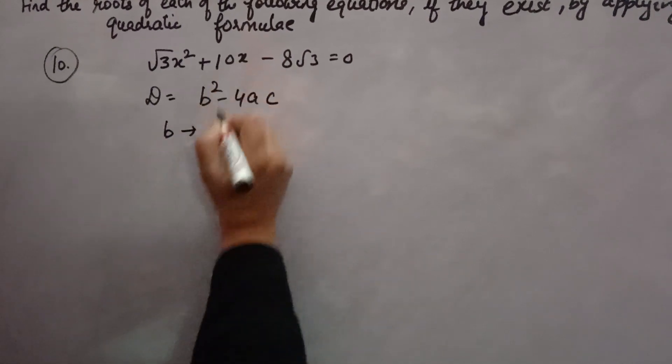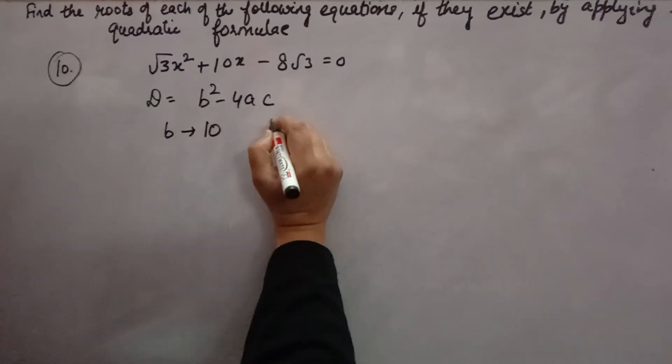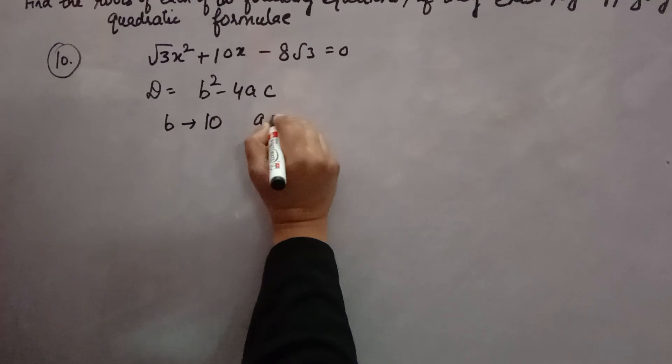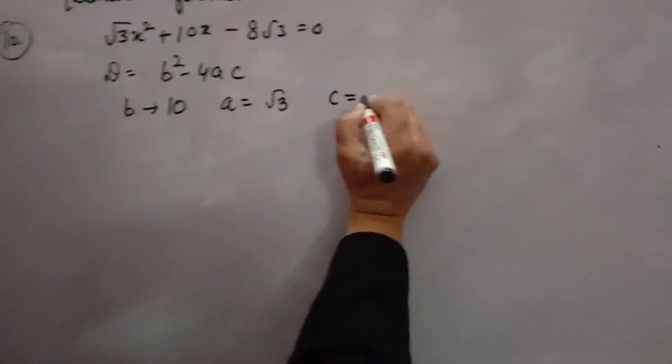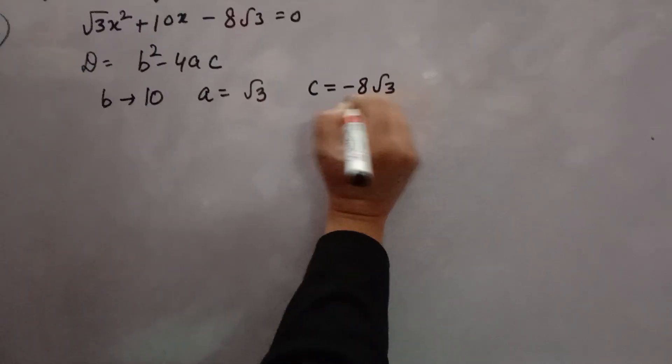Now, what is b? b is coefficient of x, in this case it is 10. What is a? a is coefficient of x squared, that is root 3. What is c? c is the constant term, that is minus 8 root 3.